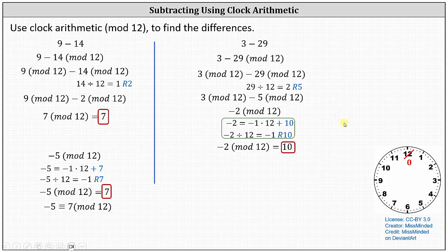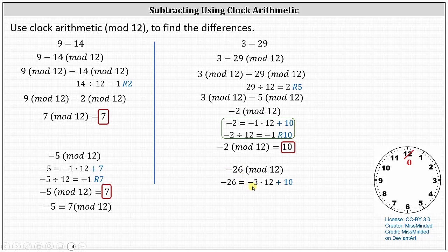The second technique is to subtract first: 3 minus 29 equals negative 26, giving us negative 26 mod 12. Being careful with the negative number, we think of negative 26 as negative 3 times 12 plus 10. Therefore, negative 26 divided by 12 is negative 3 with remainder 10, indicating negative 26 mod 12 equals 10.